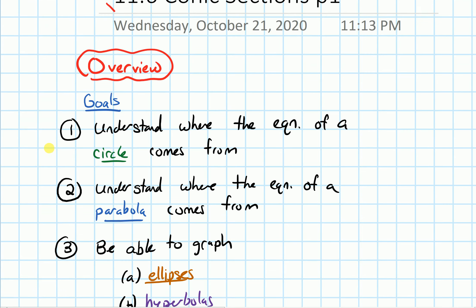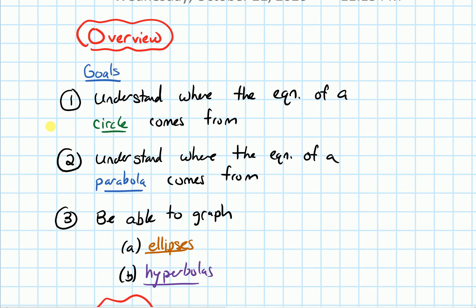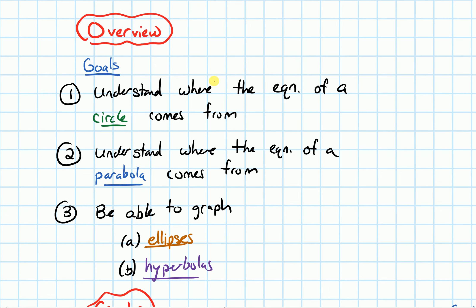Our goals for this section are: we'll talk about where the equation of a circle comes from, and where the equation of a parabola comes from, as well as where the equations of an ellipse and a hyperbola come from. And we'll do a bunch of examples where we talk about graphing parabolas, graphing ellipses, and graphing hyperbolas.